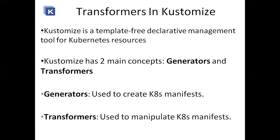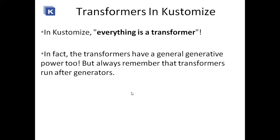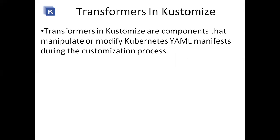In Transformers, the Kubernetes manifest is already created. In Kustomize, transformers have a generative power too, but always remember that transformers run after generators. Without generating or creating any Kubernetes manifest, you cannot modify or transform it. So transformers run after generators.